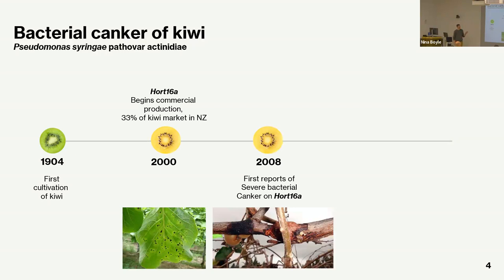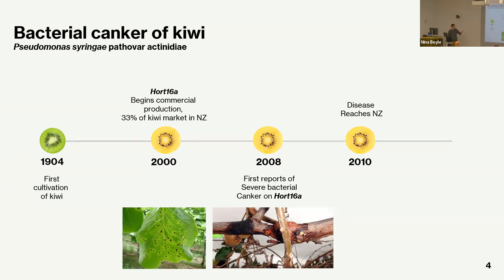Unfortunately, in 2008 we first saw reports of a severe bacterial disease called bacterial canker on this cultivar, caused by Pseudomonas syringae. It was first detected in Italy, then quickly in Japan and elsewhere. In 2010 the disease snuck into New Zealand, and from 2010 to 2012 this cultivar was completely decimated — trillions of dollars lost in two years. Farmers' entire orchards were wiped out, land value dropped 75%, and replanting kiwi means waiting another four to five years for production.